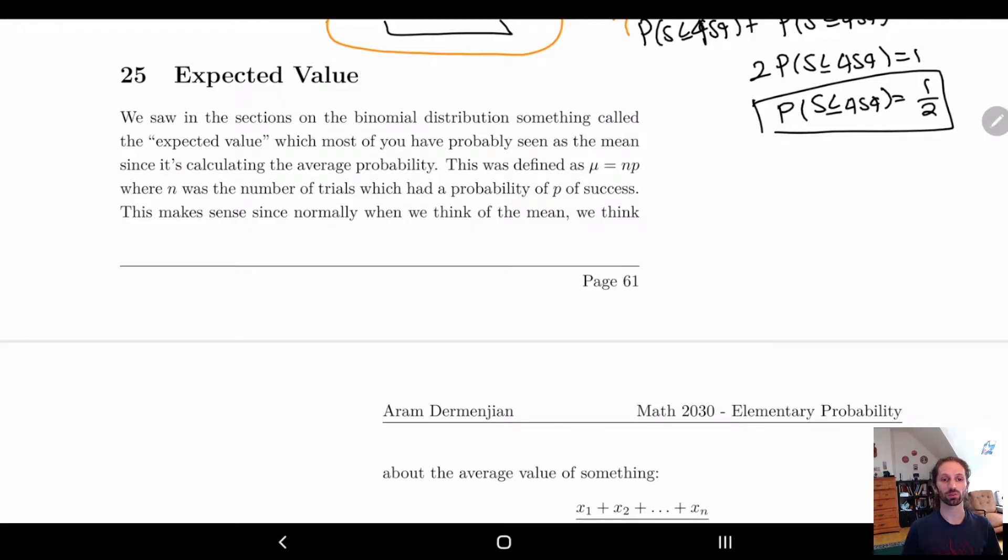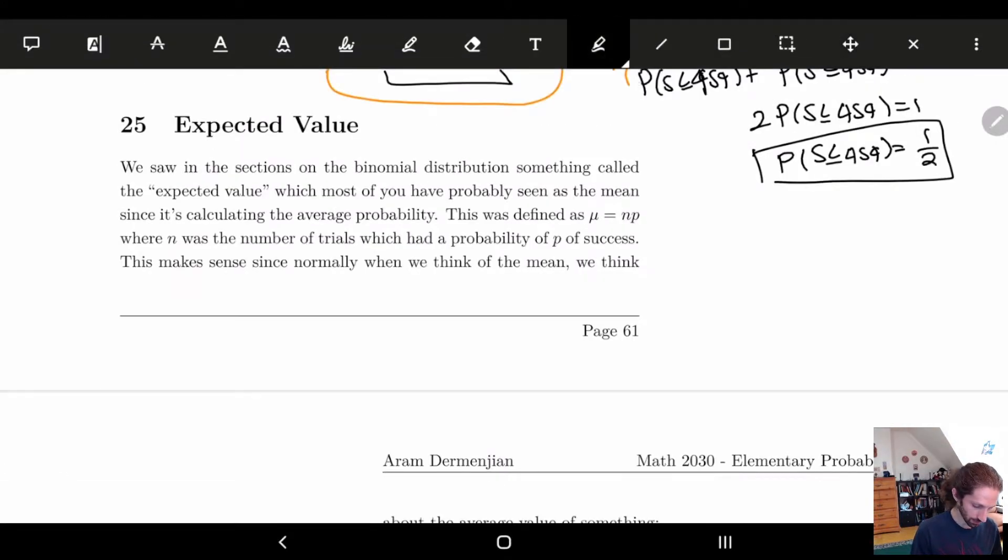Hiya! So in this video we're going to look at the expected value of a distribution. We kind of started looking at this back when we were looking at the binomial distribution and we had this formula where μ equals np. So let me highlight this. We had μ equals np, right? And this was basically giving us where n was the number of trials we did this binomial distribution for and p equals the probability of success. And so this kind of gave us the average value that we expect the distribution to be maximum at. So this is the expected value.